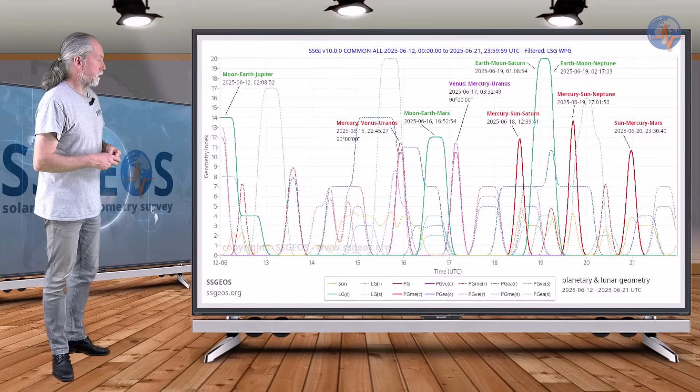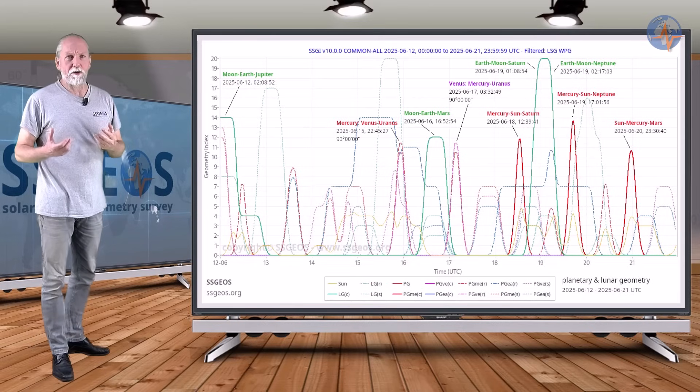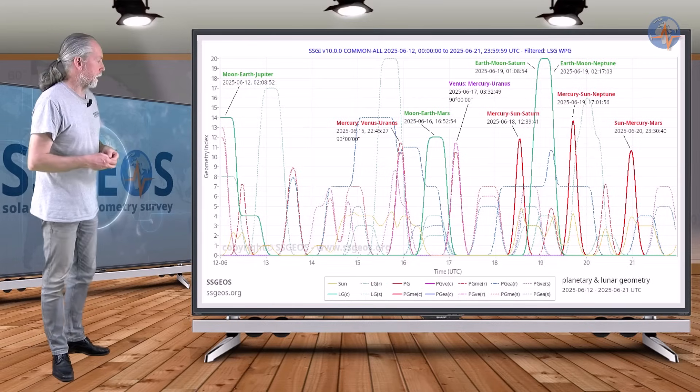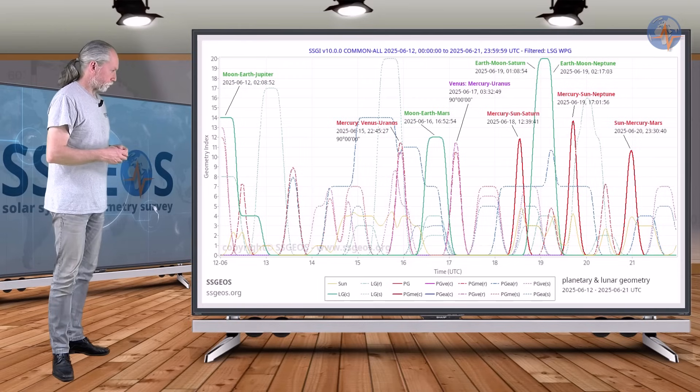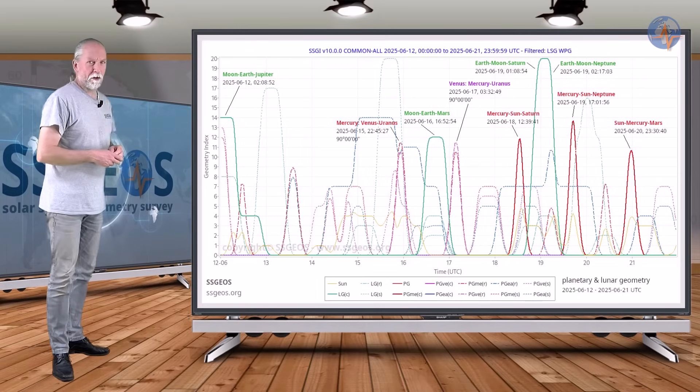That Venus-Mercury-Uranus right angle geometry should not be underestimated. Like I said, in a worst case scenario that could result in mid 7 magnitude earthquake.